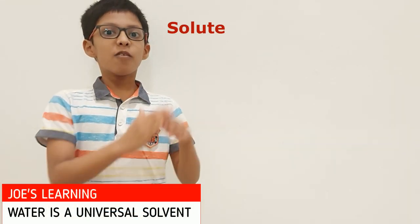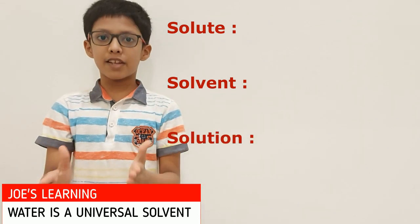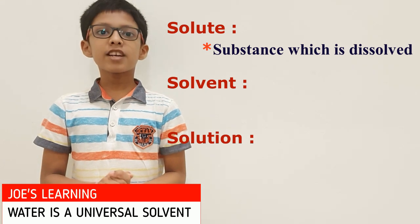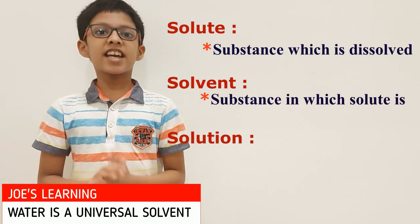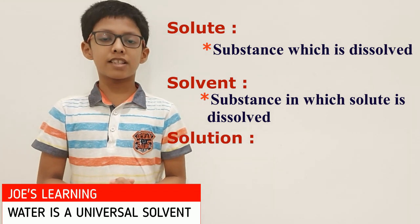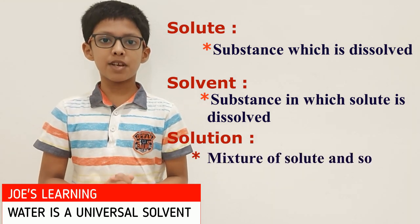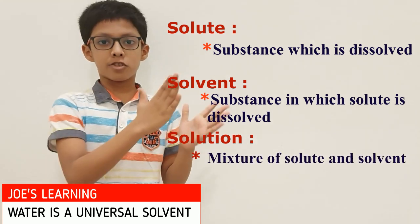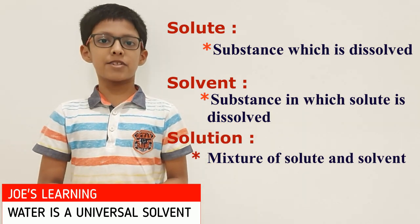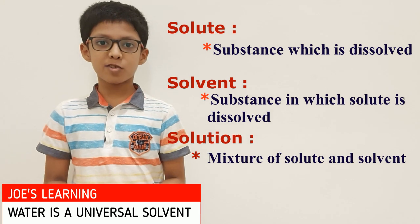Let us understand this through an experiment. Before we move on, let us first understand what is solute, solvent and solution. Solute is the substance which is dissolved. Solvent is the substance in which a solute is dissolved. Solution is a homogeneous mixture containing a solute dissolved in a solvent. In this experiment, water is our solvent.